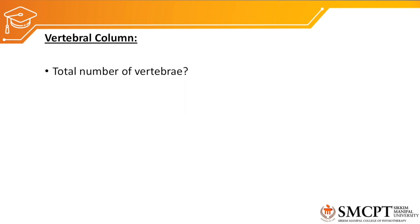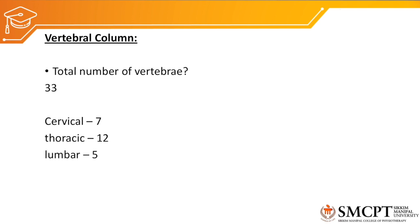The vertebral column comes under the axial skeleton system. We have 33 vertebrae in total: 7 vertebrae in the cervical region called cervical vertebrae, 12 thoracic vertebrae, 5 lumbar vertebrae, 5 sacrums, and 4 coccyx.